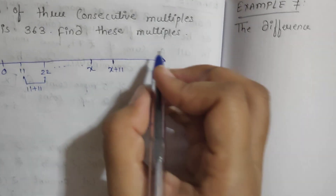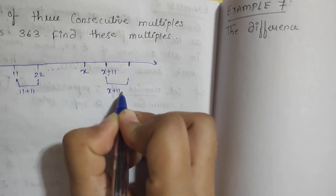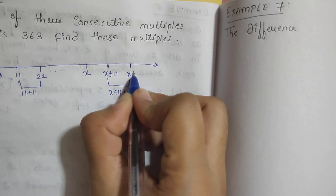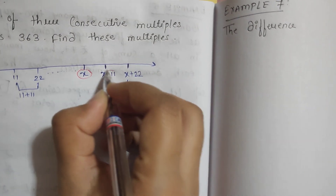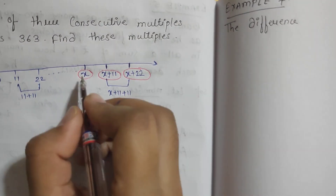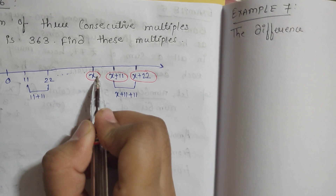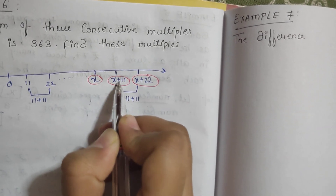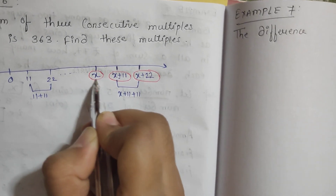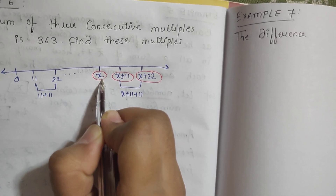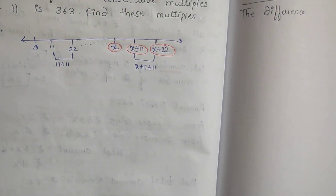Adding 11 again gives x plus 22, the third consecutive multiple. So our three consecutive multiples of 11 are x, x plus 11, and x plus 22. We need to find x, and the other two will follow.